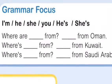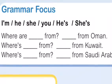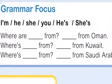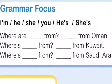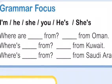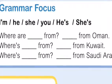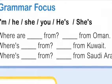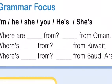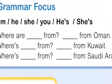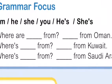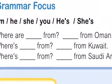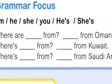The first sentence: Where are [blank] from? Which one are we going to choose? The answer is going to be: [blank] from Oman. The second sentence: Where's [blank] from? [Blank] from Kuwait. The third sentence: Where's [blank] from? [Blank] from Saudi Arabia. We're going to choose either he, she, it, I, his, or she's.